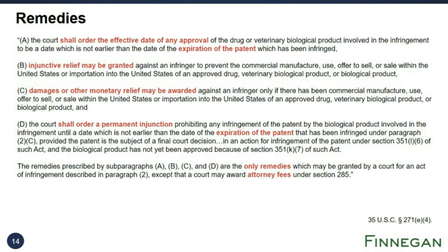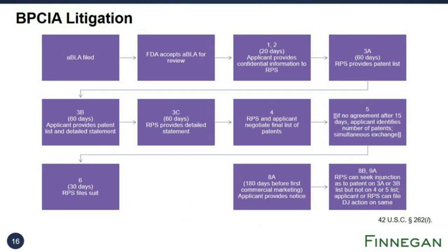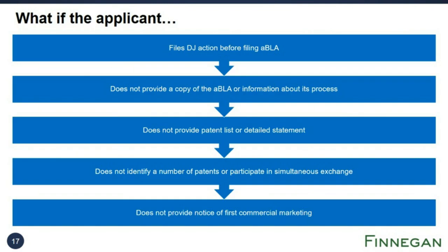The statute and case law give us information about what happens if the applicant takes or avoids certain actions. First, the applicant likely cannot avoid the patent dance altogether by filing a declaratory judgment action, because the action would likely lack adequate case or controversy. Second, if the applicant does not provide a copy of its application or other required information, the sponsor may not force them to do so with an injunction—instead, the sponsor but not the applicant may file a DJ action. Third, if the applicant does not provide a patent list or a detailed statement, the sponsor may file a DJ action as to any patent on the initial list.